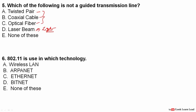802.11 is used in which technology? 802.11 is for wireless LAN. For Ethernet, the standard is 802.3. You should remember both of these standards.